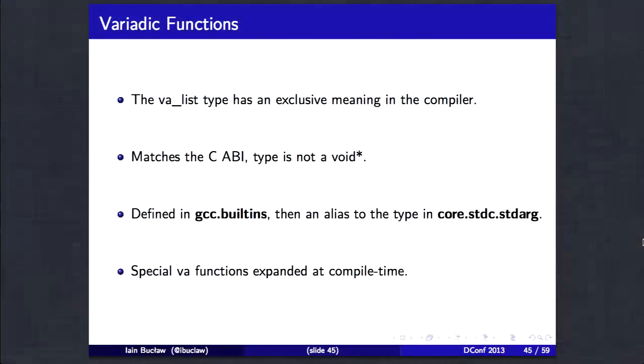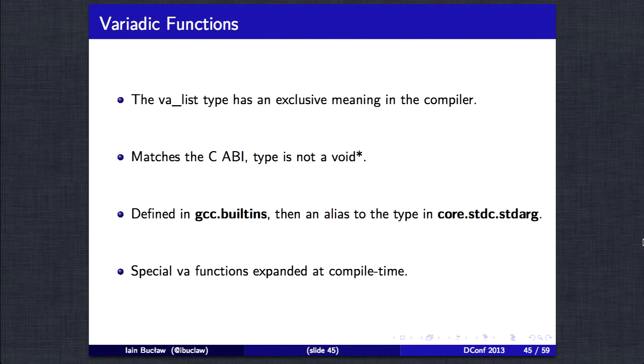So, again, another example. Using pow L. And it comes down to here, where it folds it, rather than just doing an external C call. It's probably also worth noting that if it's not able to fold it, then it will just call a library call. As I've said, the va_list type matches the C ABI and is not a void. It's defined within gcc.builtins as an alias. And it's within this module that we do some special processing.